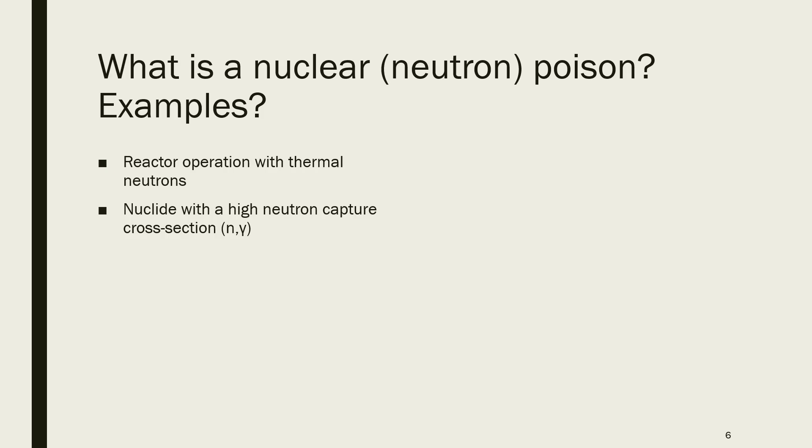So what is a nuclear or neutron poison? Well, a reactor operates with thermal neutrons and nuclei with high neutron capture cross-sections, so they can capture neutrons quite well. They can be considered a neutron poison. Some of them are negligible, some of them are not. But for now, we are just talking about general isotopes that are inside the nuclear reactor that have a very high neutron capture cross-section. What is a very high neutron capture cross-section? About one barn is quite good.